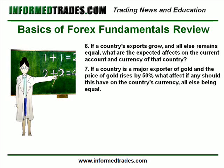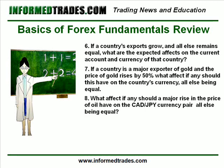Number seven: if a country is a major exporter of gold and the price of gold moves up by 50% over the course of a year, what would the expected effect, if any, on that country's currency, all else being equal? Number eight: Japan is a major importer of oil and Canada is a major exporter of oil. If the price of oil goes up by 50% over the course of a year, then what effect, if any, should this have on the Canadian dollar/Japanese yen currency pair, all else being equal?